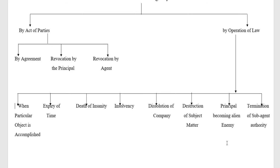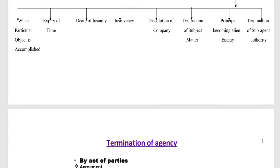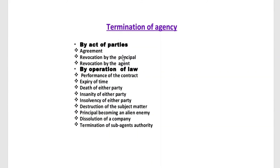The last aspect is the termination of sub-agent authority, which also causes the termination of agency. To summarize, the agency can be terminated by act of parties — by agreement between principal and agent, revocation by the principal, and revocation by the agent. By operation of law — performance of the contract, expiry of time, death of either party, insanity of either party, insolvency of either party, destruction of subject matter, principal becoming an alien enemy, dissolution of company, or termination of sub-agent authority.